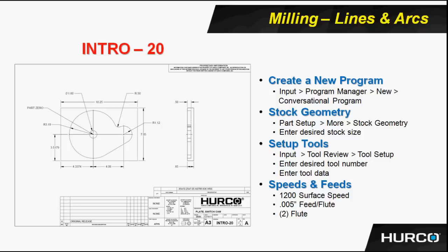Give print Intro 20 a try. The best place to start on this particular print is at the nine o'clock position on the very large circle, and we're going to want to cut in the counterclockwise direction because this is a pocket, and we want to climb mill around the outside. Once you've successfully got the shape programmed, insert a second block as a mill circle and make that mill circle a pocket island. Intro 20 will be a separate video that takes you through programming this part as a lines and arcs contour, as well as inserting the pocket island.